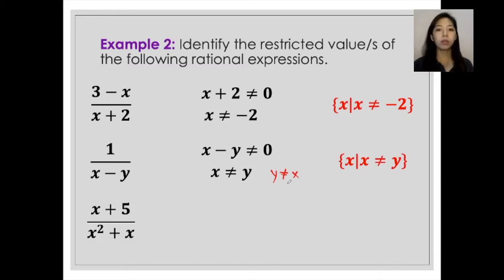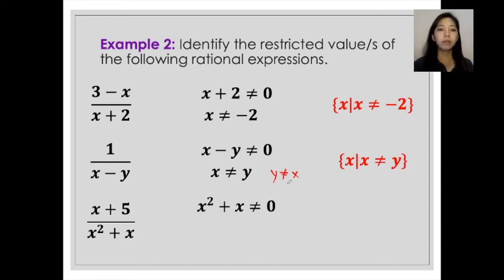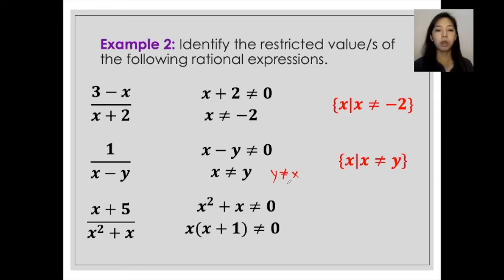For the third given, x plus 5 over x squared plus x, to solve for the restricted value, get the entire denominator: x squared plus x is not equal to zero. For cases like this, you have to analyze the expression because you can still apply factoring. Looking at x squared plus x, you can apply common monomial factoring, where the common factor is x. So this expression becomes x times the quantity x plus 1, which is not equal to zero.